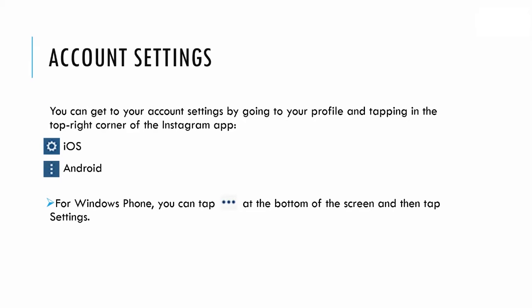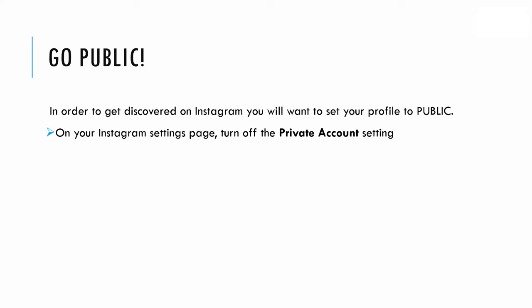Next, we want to get into your account settings. You can access them by going to your profile and tapping the top right corner of the Instagram app. For iOS it's the little gear icon; for Android it's the vertical three dots; and for Windows Phone it's at the bottom of the screen as horizontal three dots. In account settings, make sure your profile is set to public — simply toggle off the private account setting.